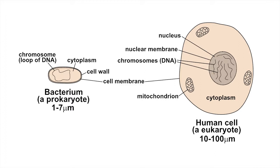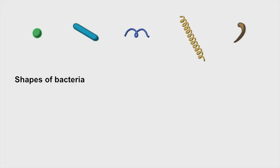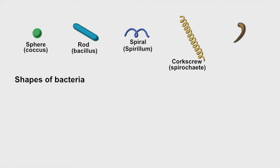Unlike cells in our own body, a bacterial cell has a semi-rigid cell wall in addition to a cell membrane, which gives shape to the bacterium. Typical shapes are spheres, called cocci; rods, called bacilli; spirals, called spirilla; corkscrew-shaped bacteria called spirochaetes; and comma-shaped bacteria called vibrio.